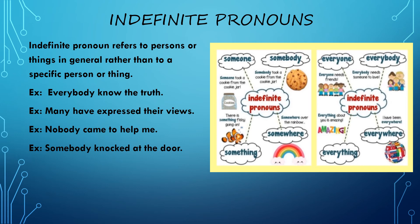Next: many have expressed their views. Suppose 10 students are there — out of 10, five have expressed their views. I am not calling out their names, I am saying in general that many of you have expressed your views. Nobody came to help me — nobody means no one came. I am saying it in a general sense, not naming anyone. Somebody knocked on the door — I am not saying exactly who knocked the door, just that somebody did.